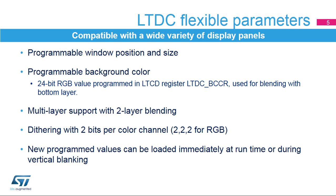Multi-layer support with blending supports two layers. Dithering uses two bits per color channel, 2-2-2 for RGB. The dithering pseudo-random technique adds a small random value or threshold to each pixel color channel RGB value, rounding up the most significant bits when displaying 24-bit data on an 18-bit display. New programmed values can be loaded immediately at runtime or during vertical blanking.